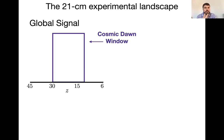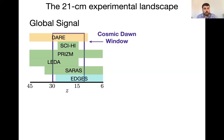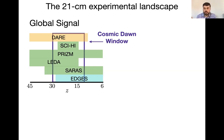There are two ways of measuring the 21-centimeter signal. The first is the global signal, which is the average across the sky — the simplest way of doing it. Showing as a function of redshift, the purple square is the cosmic dawn window. The experiments in green are fully funded and have been taking data for a while. The one in yellow is not yet funded — it's the only one not ground-based, expected to go to space and orbit around the moon to avoid complications of the atmosphere. The one in blue (EDGES) has already claimed a detection that is not clear is right.